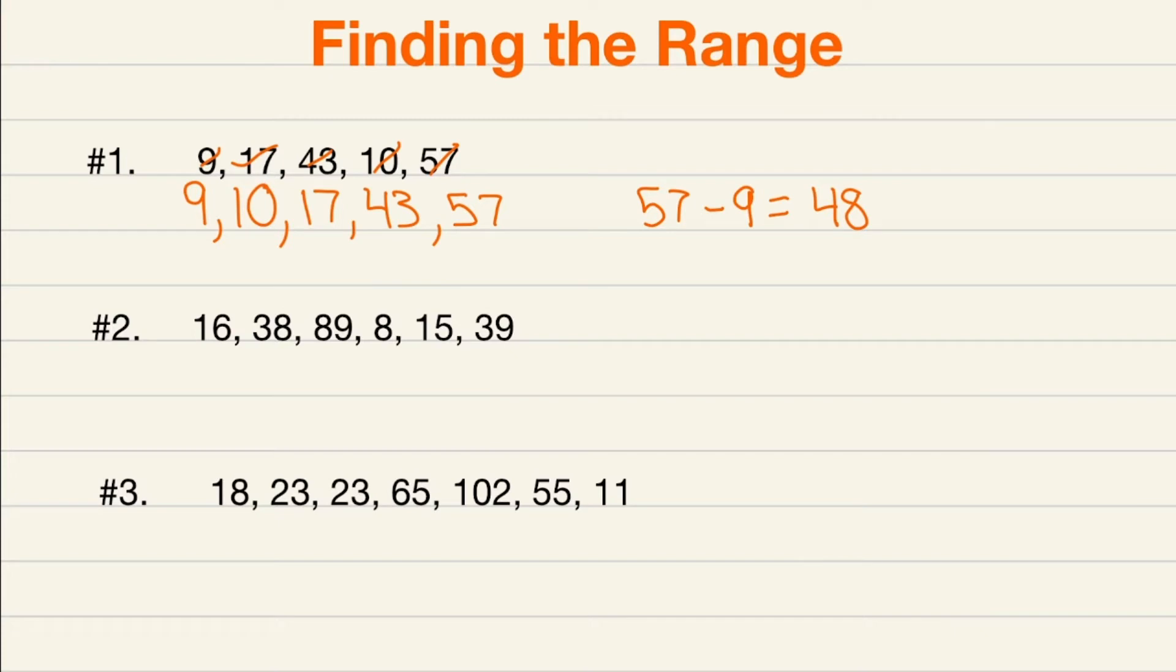For number two, let's order our numbers from least to greatest. So we have 8, 15, 16, 38, 39, and finally 89. I know for sure where my largest value is and what my smallest value is. Now let's subtract them. We have 89, that's my largest, minus my smallest number which is 8. If we subtract largest minus smallest, we are going to get a range of 81 for number two.